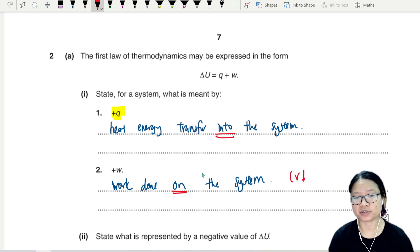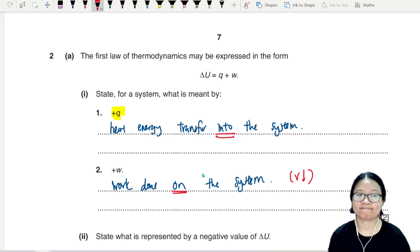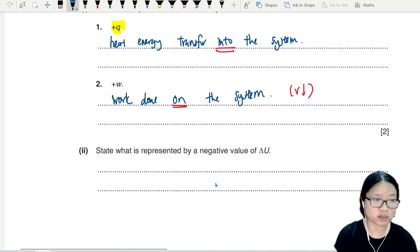The volume decreases because there's an external force pushing down on the gas. State y is represented by a negative value of delta U. Delta U is internal energy, so this shows a decrease in internal energy.